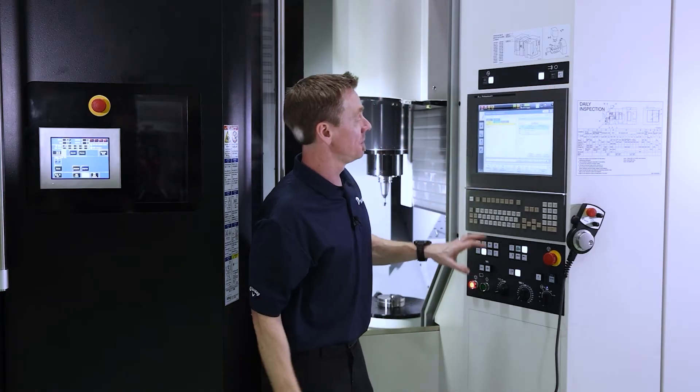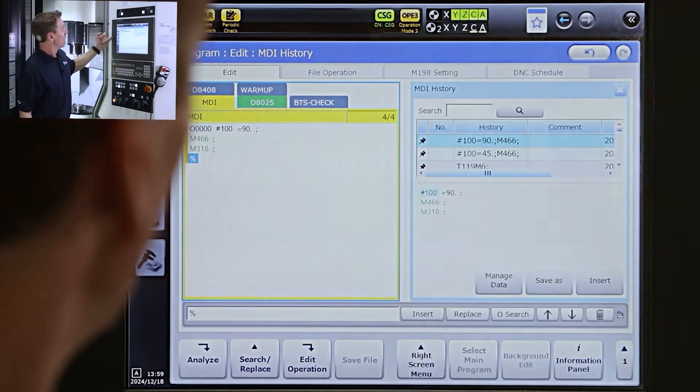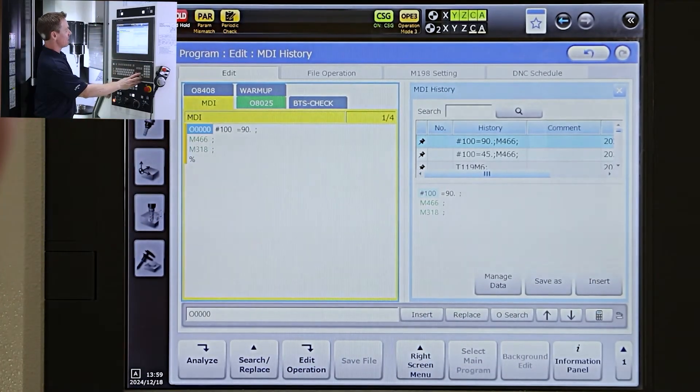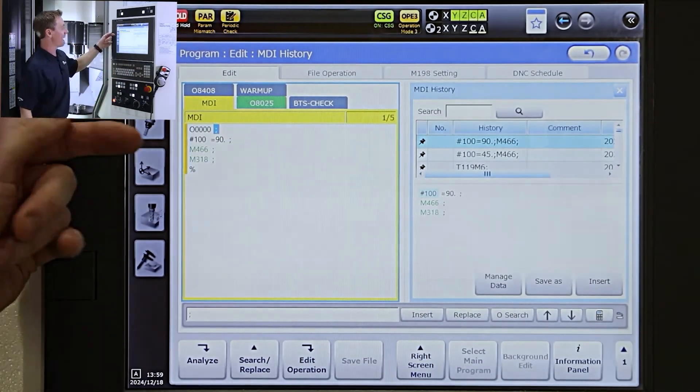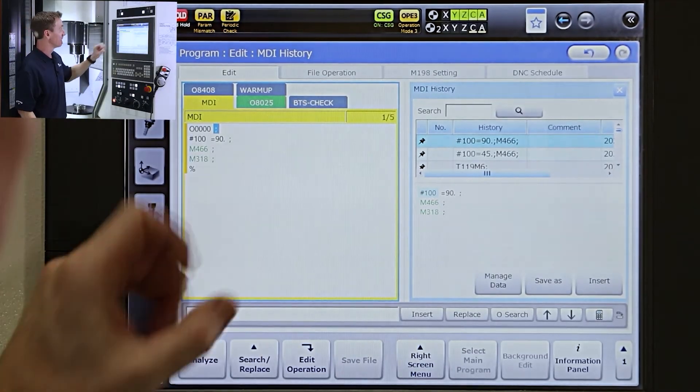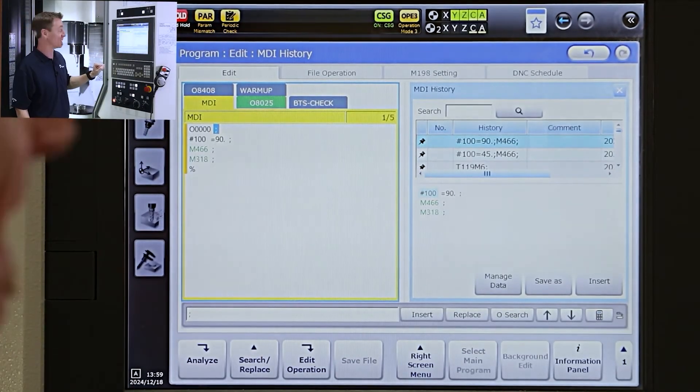So in order to externally orient the spindle, this is our sequence of code. We're going to do a pound 100 equals the angle we want to rotate to. In this situation, we're using 90 degrees.